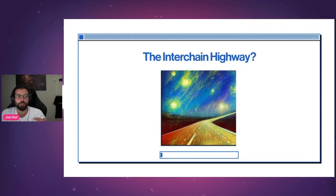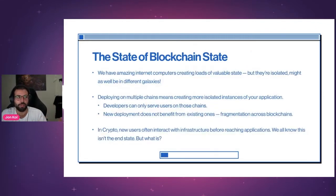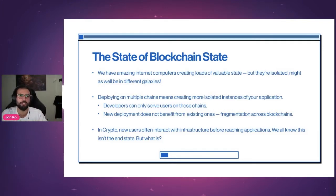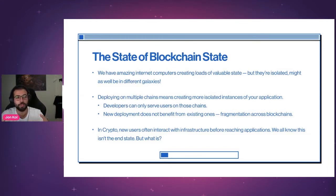Let's talk about the state of blockchains. Everyone here has a good enough understanding of what these are — we have these amazing internet computers, functionally just state machines. They're creating loads of valuable state in all of our combined interactions. But without something like an interoperability network, without a totally robust XCM protocol, that state can't really be accessed by different chains — it might as well be in a different galaxy.